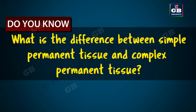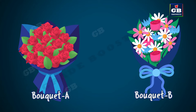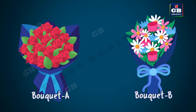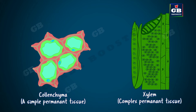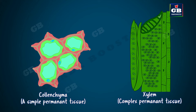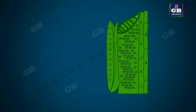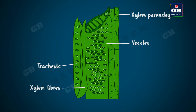Do you know what is the difference between simple permanent tissue and complex permanent tissue? Here are two flower bouquets. Can you spot the difference between them? Bouquet A is made of same kind of flowers and bouquet B is made up of different types of flowers. In the same way, simple permanent tissue is made up of similar kind of cells, whereas complex permanent tissue is made up of more than one type of cells. Even though there are different types of cells in one tissue, they all work together for a common function.